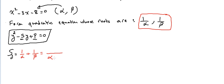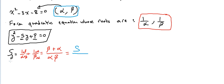Multiplying through: the numerator becomes beta + alpha, and the denominator is alpha·beta. So Sum_y = (alpha+beta)/(alpha·beta). Now alpha+beta is the sum of the roots of the original equation, and alpha·beta is the product of the original equation. So we need to find the sum and product of the original equation in x.